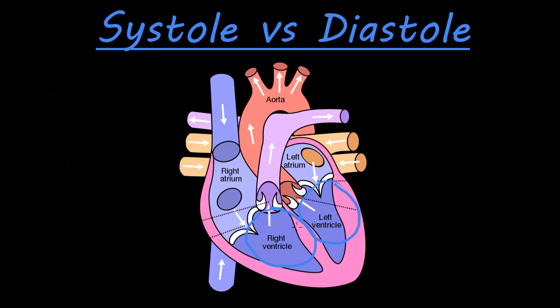We have the left and right ventricles on the bottom. So that just means the heart is going to contract and we're going to push that blood flow. If the right ventricle contracts, the blood's going to go up; the left ventricle contracts over here. So systole just refers to contraction of the heart.